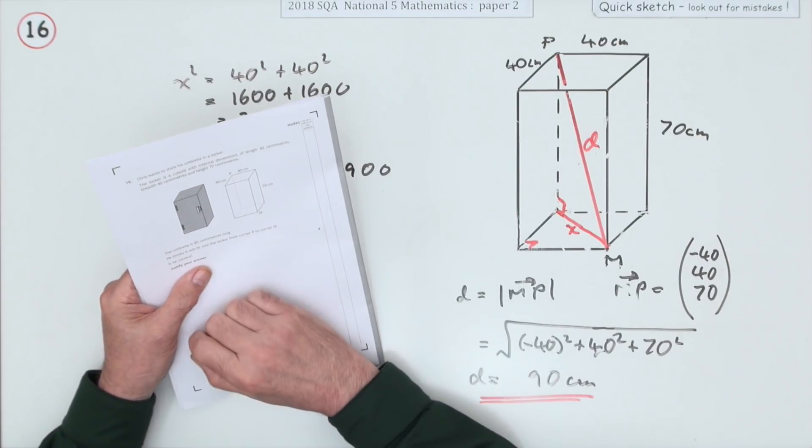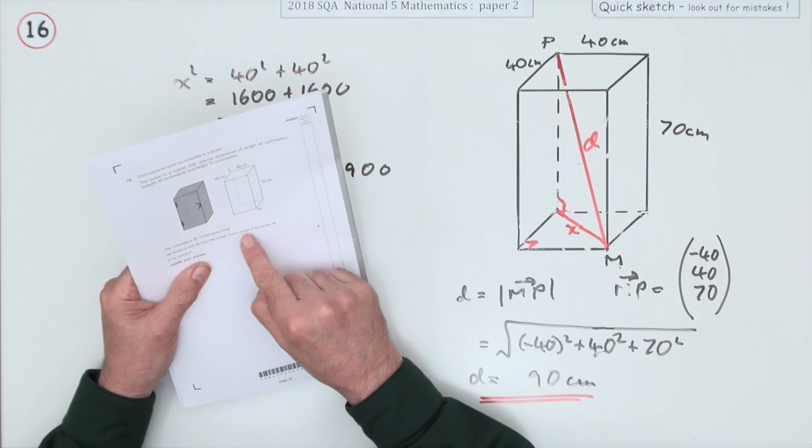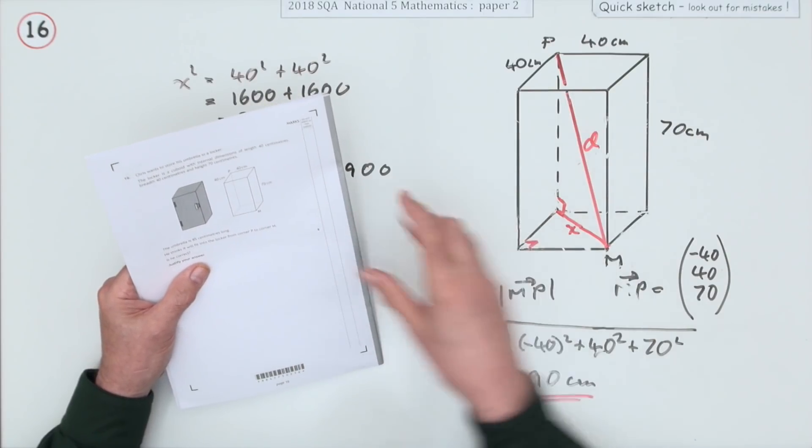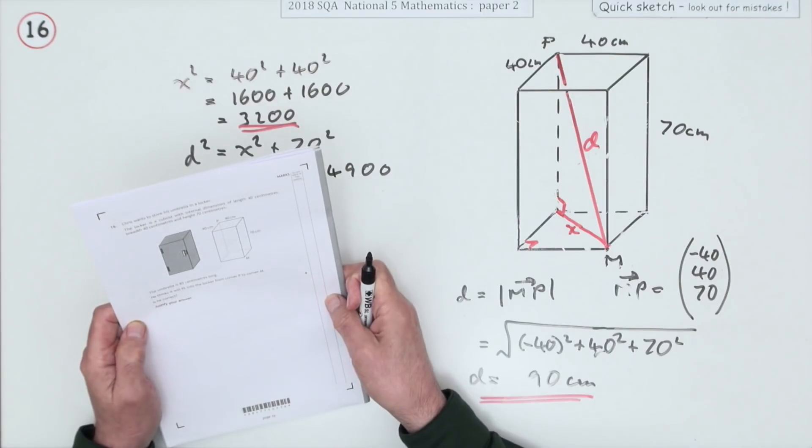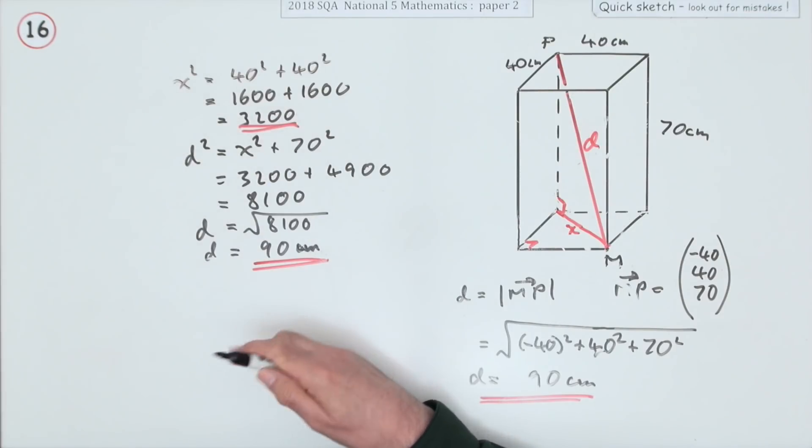But why do they say 'from corner P to corner M'? It makes it sound as if it's exact. He thinks it'll fit into the locker from corner P to corner M. Well, obviously yes, it fits inside.